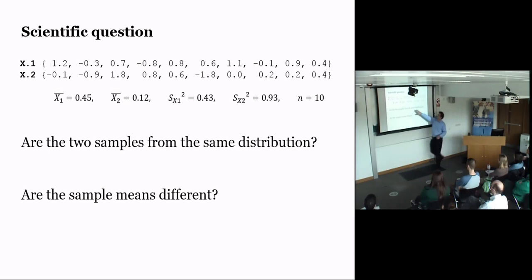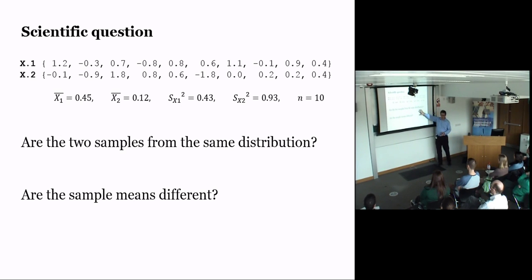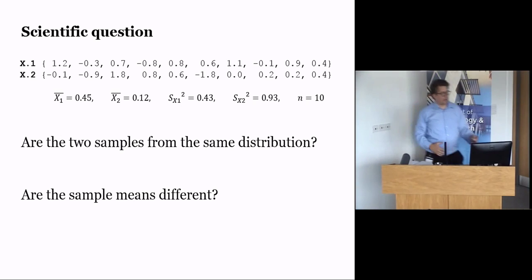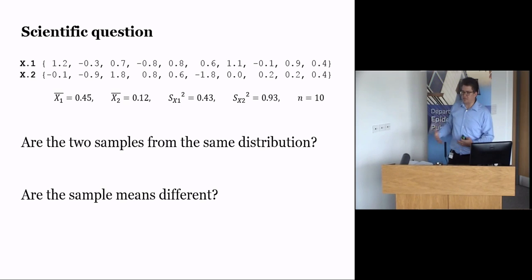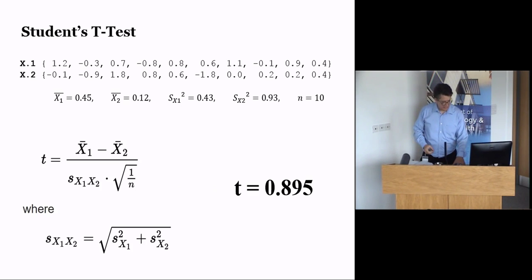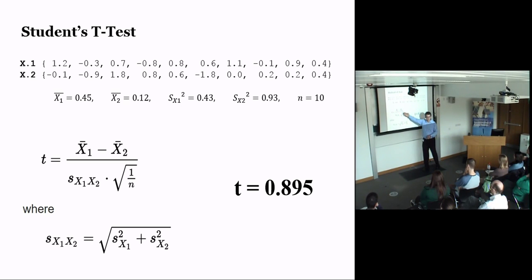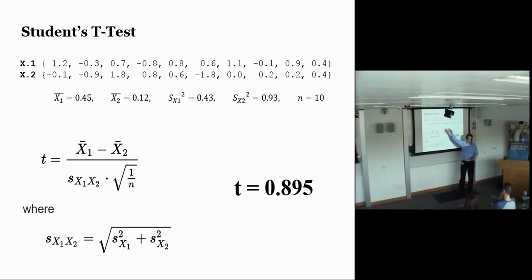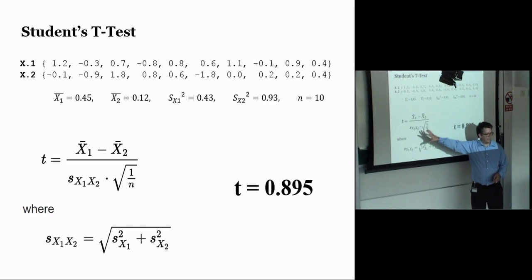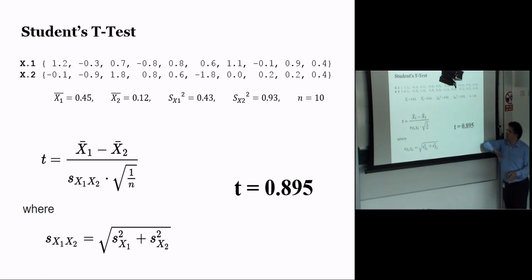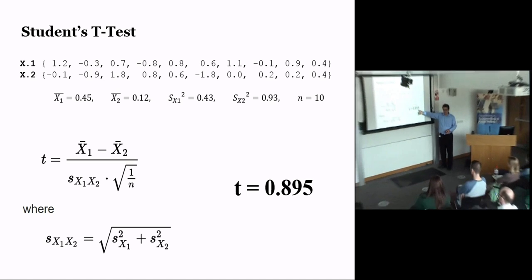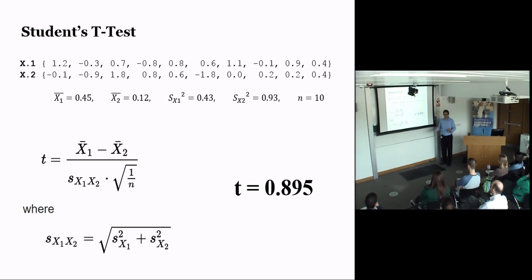Let's see that in practice. Here we have two sets of data, ten observations each. We can calculate the means, variances, and number of observations, and then ask scientific questions like: are the two samples from different distributions, or are the sample means different? That leads us to a t-test. The t-test formula is simple math we could all do by hand, but we have computers.